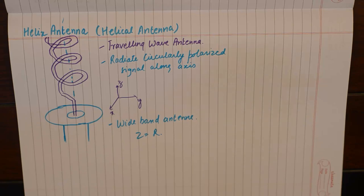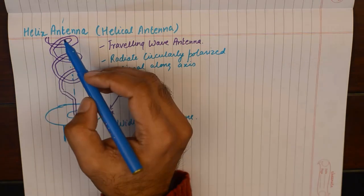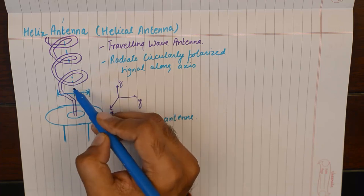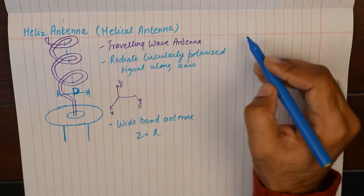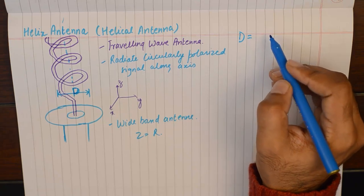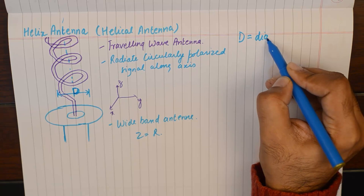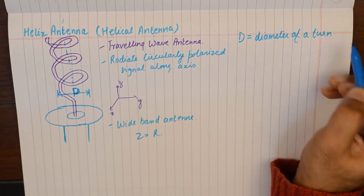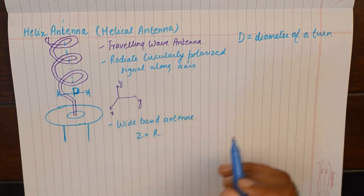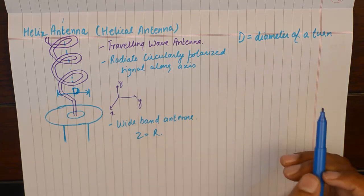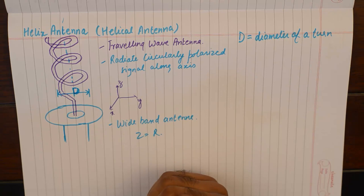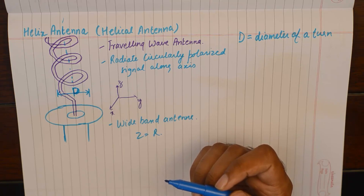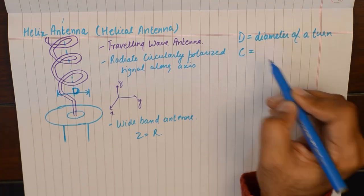Let us begin with the construction and parameters associated with the helical antenna. As far as the geometry is concerned, it has a few parameters worth noting. The first one being the diameter, D, as the diameter of a turn. Depending upon the size and length of the helical antenna, we'll have bigger and smaller diameters, more and less number of turns. The circumference can be calculated as C, which will be pi into D.